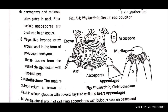The vegetative hyphae grow around the ascogonium in the form of a pseudoparenchyma. These tissues form the wall of the cleistothecium with the appendages. This is the fruiting body — these are the fruits of the fungi.